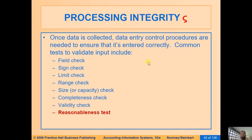Reasonableness checks are intelligent checks that act as warnings rather than hard errors. For example, if you are in May and post an accounting entry with an April posting date, the system might warn you that you are posting in a previous month. Similarly, if an invoice number or amount repeats, the system may ask 'are you sure this invoice has already been posted?' These are warnings, not strict errors.